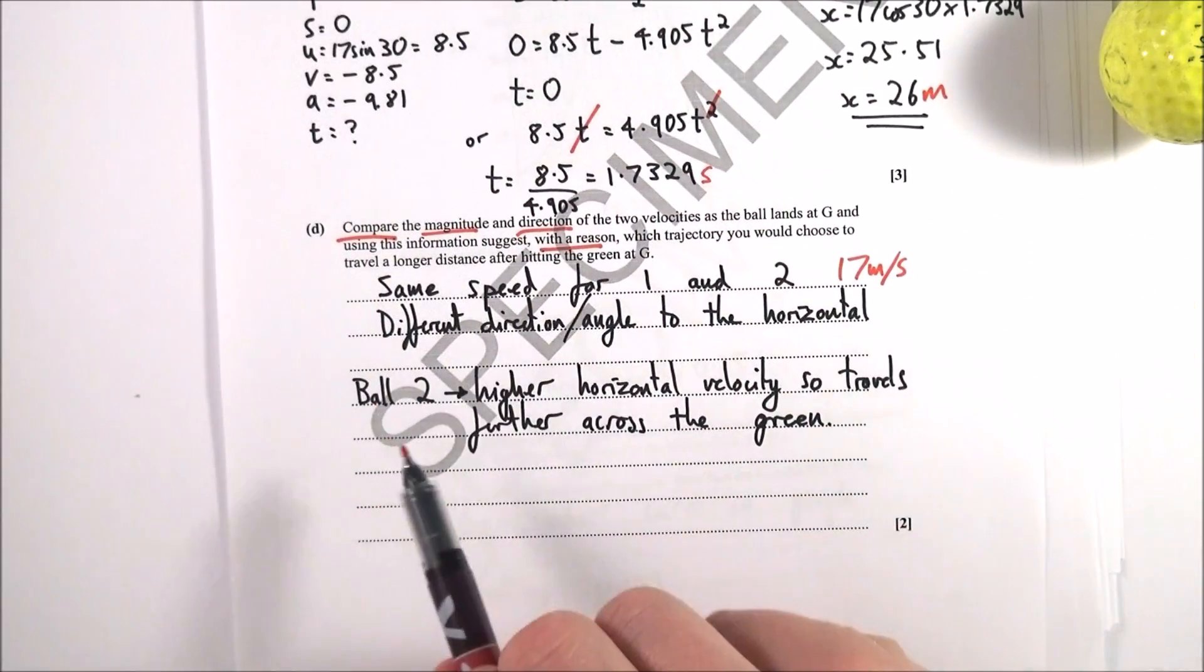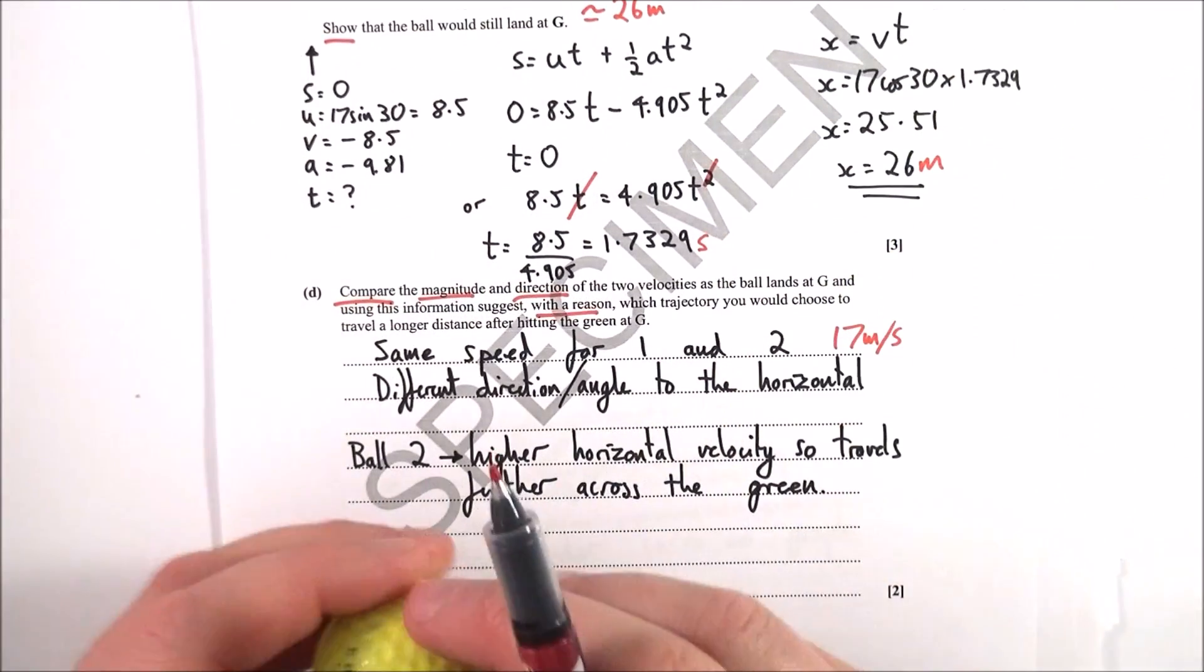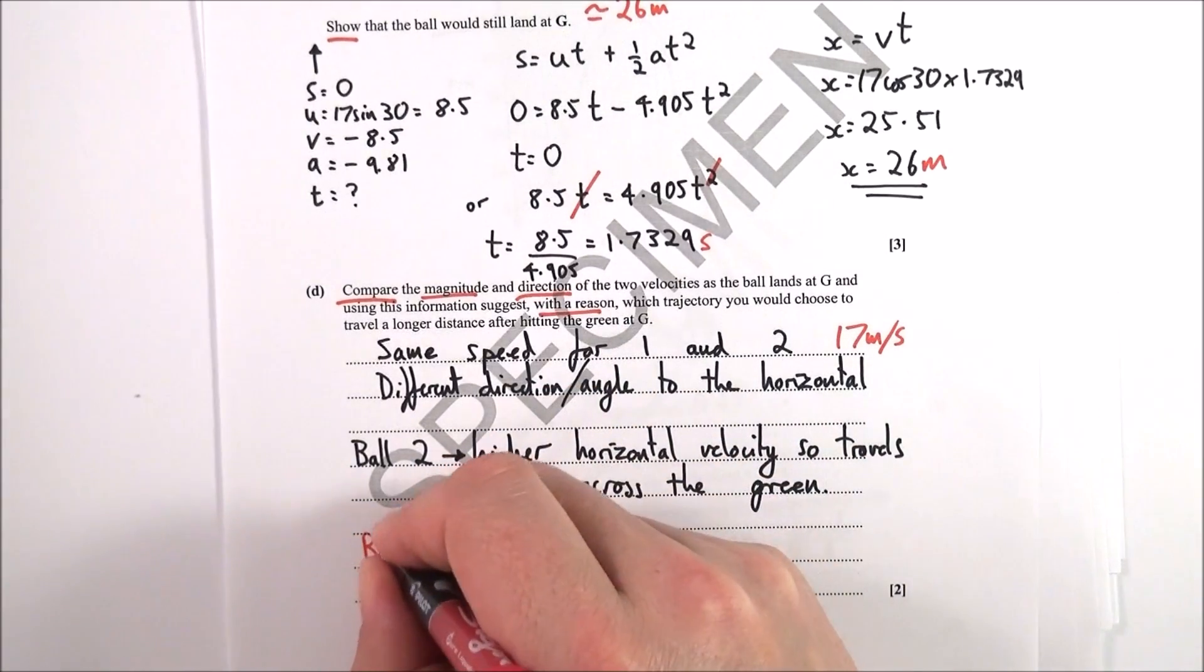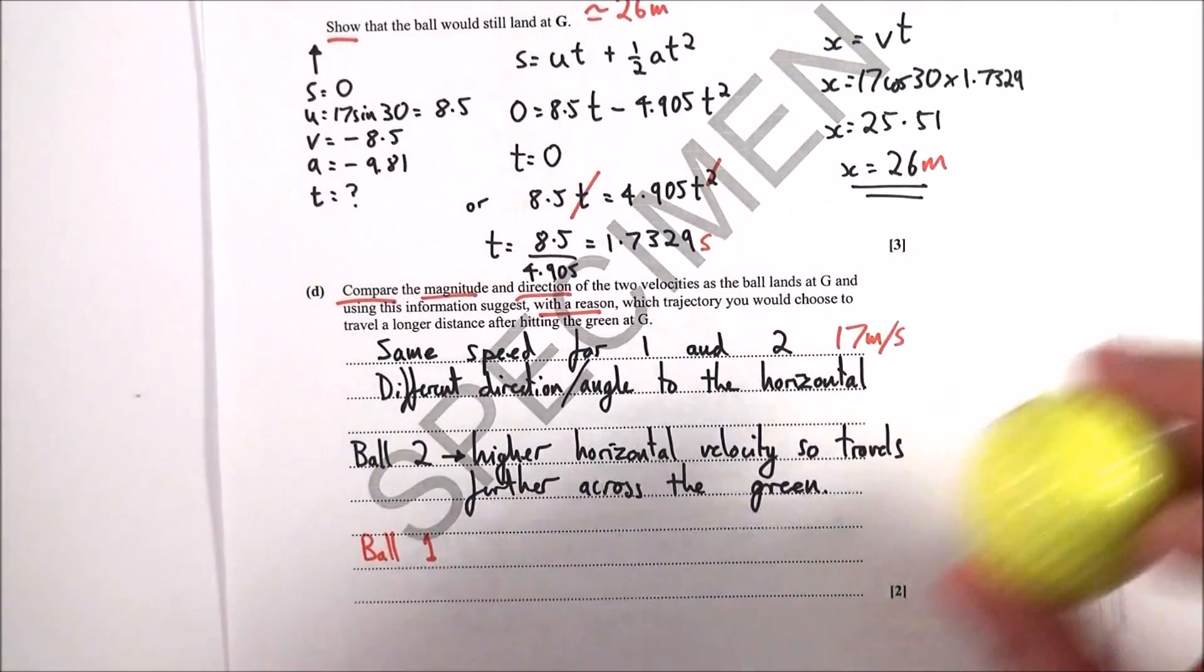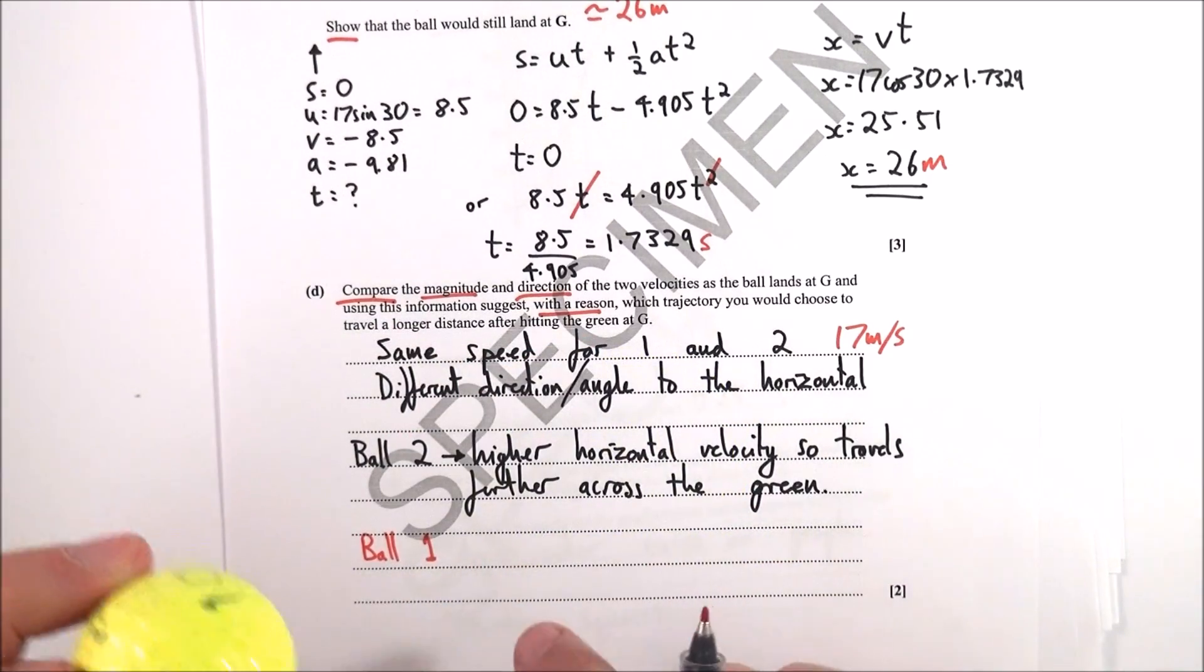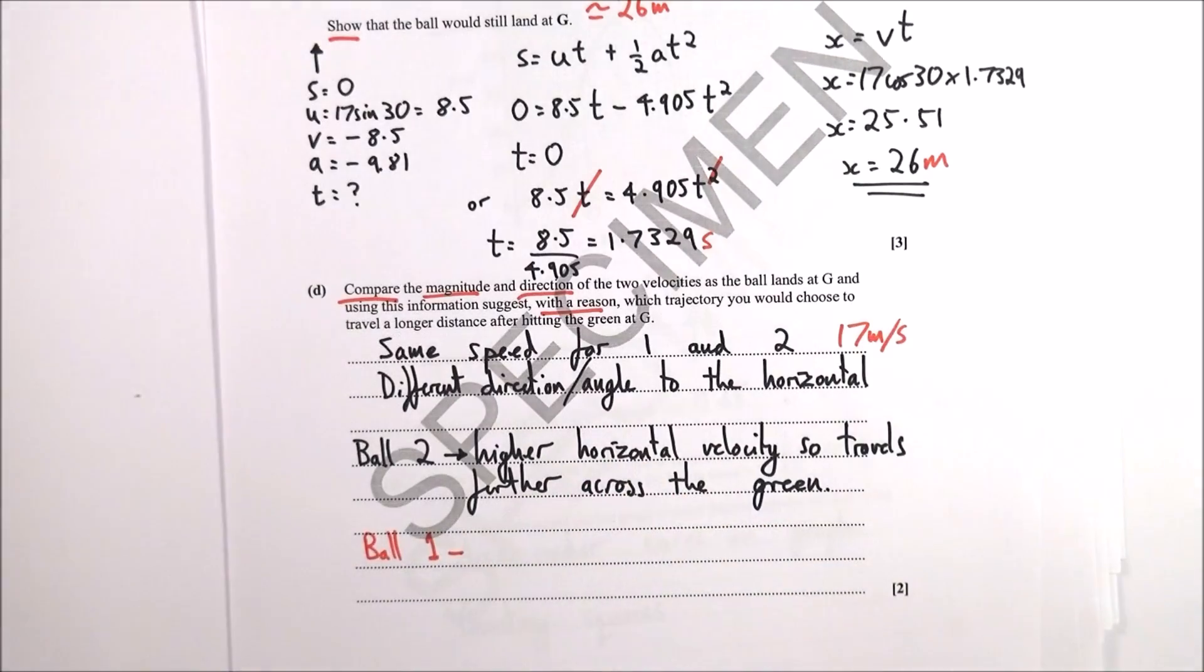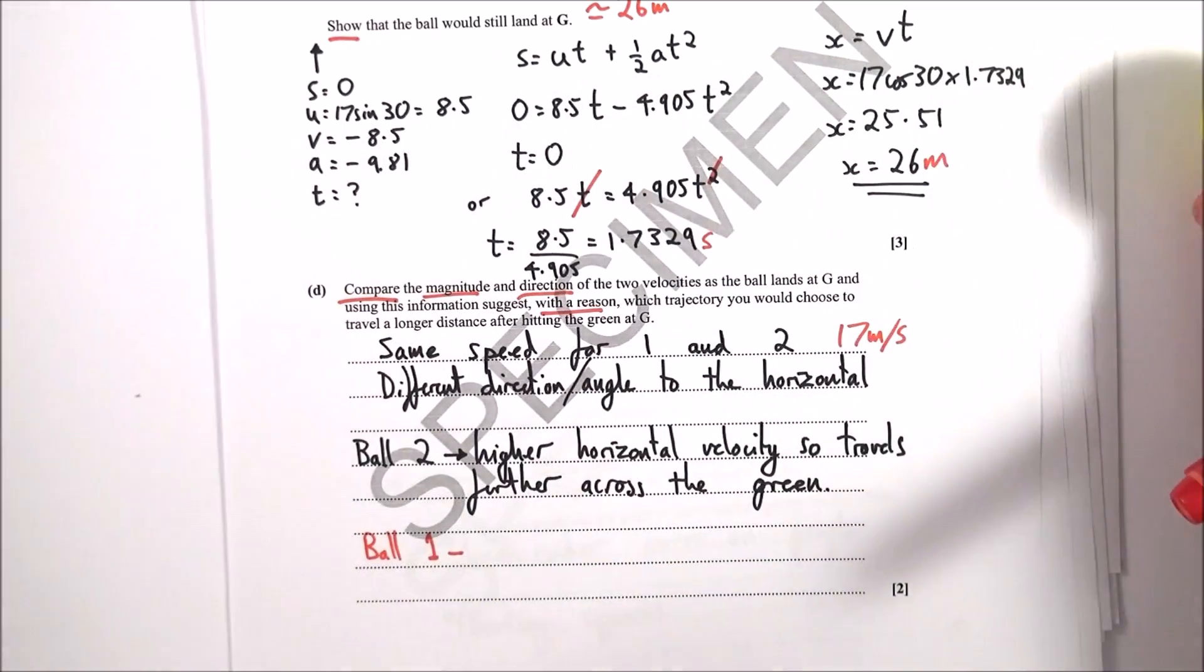So which one would go further, which one would get further from when it lands to actually getting to the hole? Well, basically I said that ball two has a higher horizontal velocity, so it travels further across the green. So effectively this one here comes in faster and therefore moves a lot further across the green. However, you could have said ball one. It doesn't matter if you said ball one or ball two as long as you say which is which. So you might say that ball two has a higher horizontal velocity so it travels further, but counter to that, ball two might have been in contact with the grass for a lot longer and therefore there might have been more friction. So maybe ball one went further because although it came at a higher, steeper angle, that maybe meant it bounced higher and therefore there's less friction between the ball and the grass.